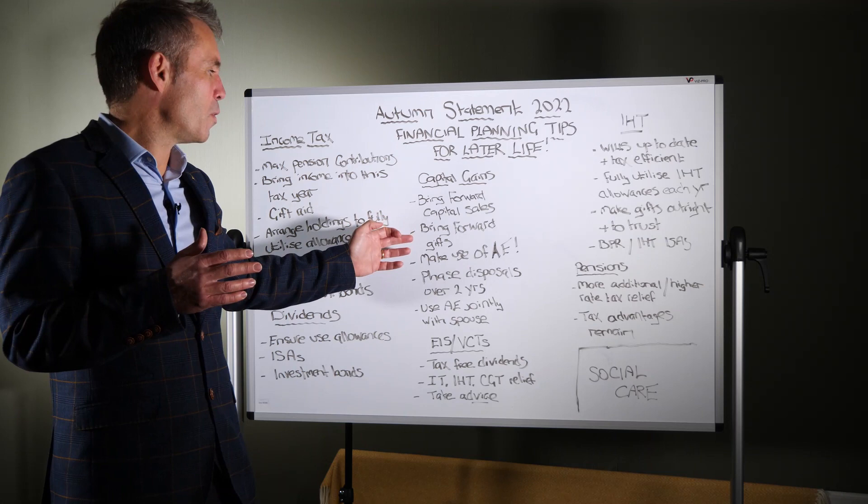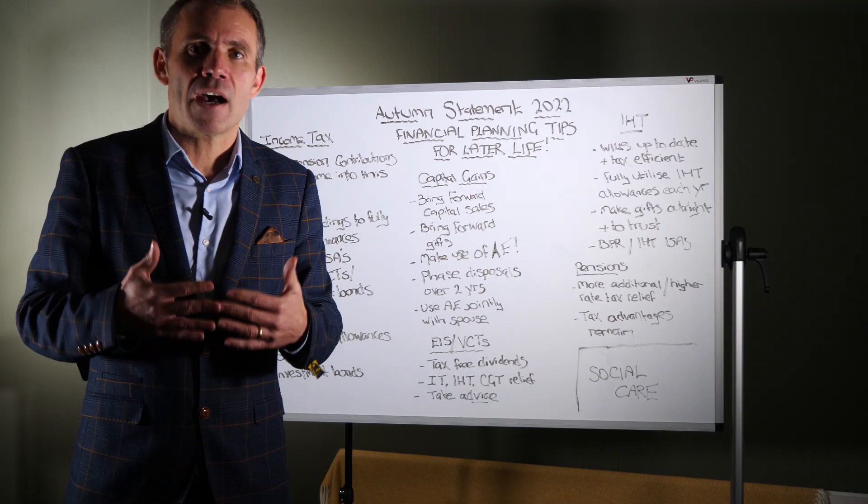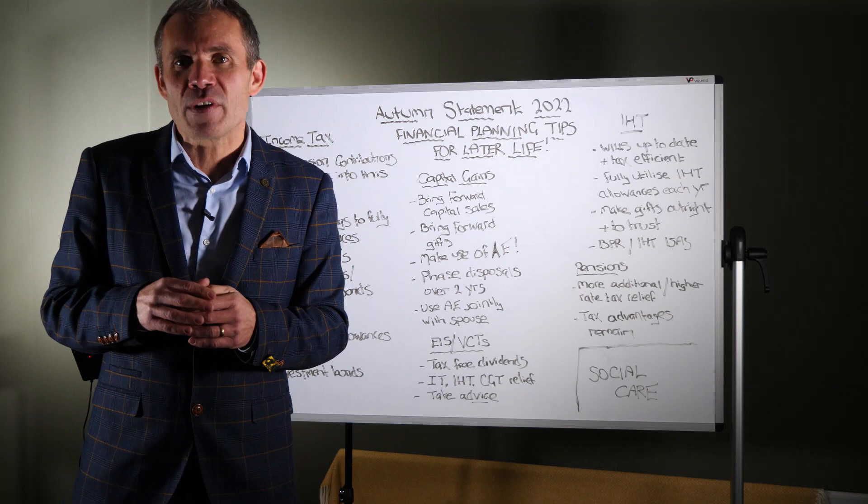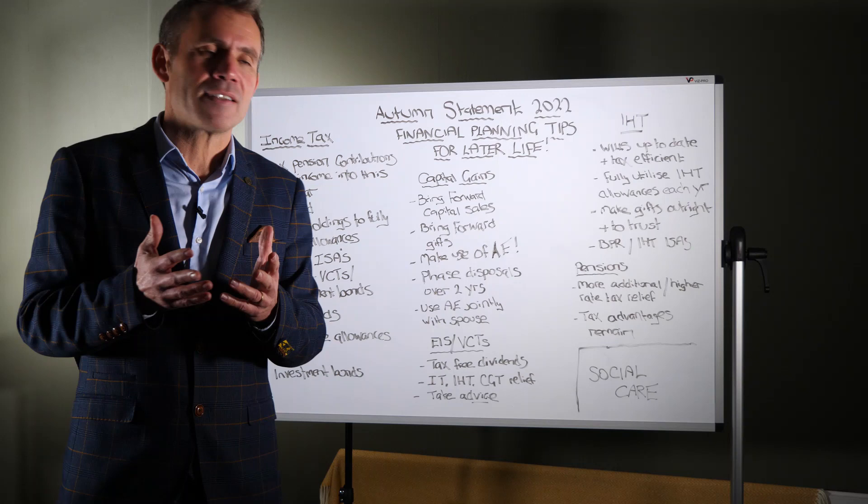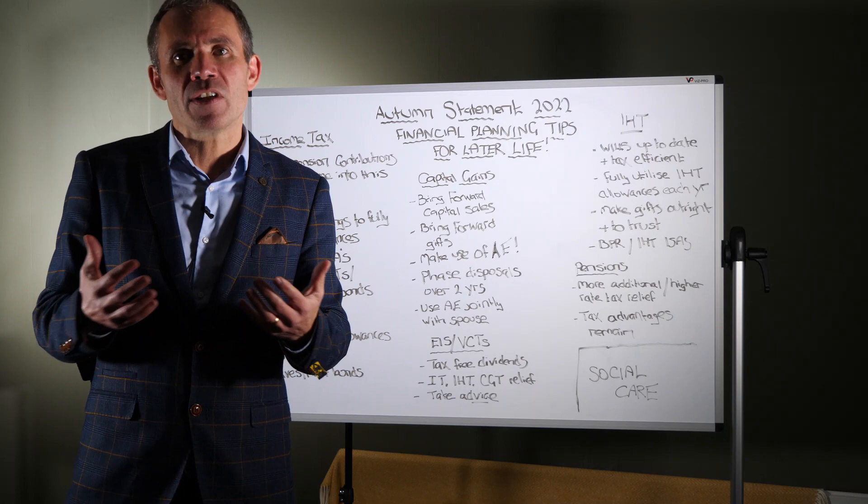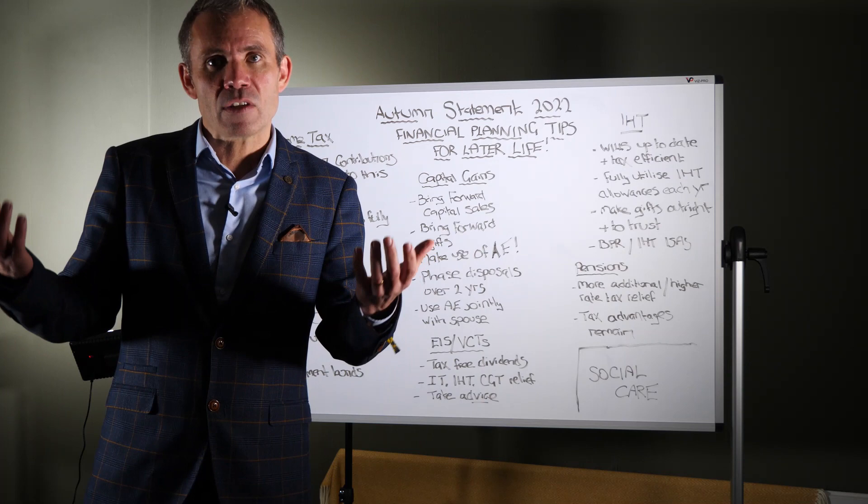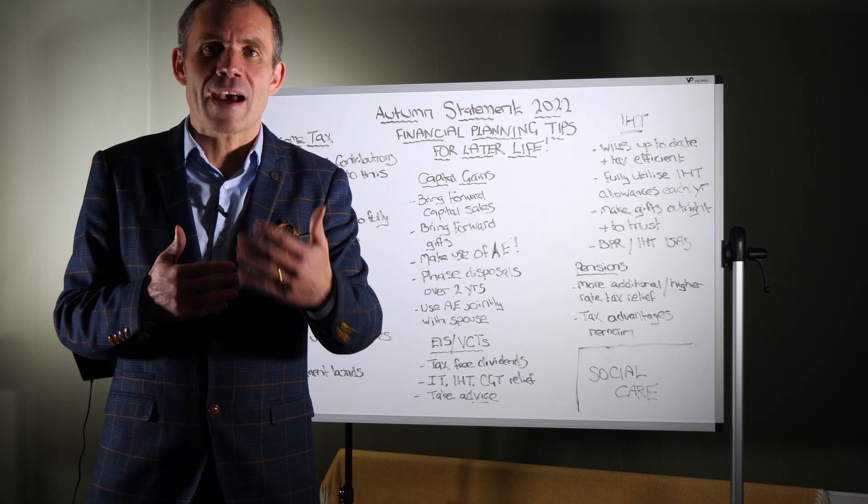Equally, if you're looking to make any gifts to children or grandchildren of assets or properties that are subject to capital gains tax, maybe bring those decisions and those gifts forward again to this tax year. Just make use of that annual exemption. It is the most underutilised exemption, the annual capital gains exemption. Maybe phase disposals over two tax years. Sell some of an asset this tax year, more of the asset next tax year. And remember to use the allowances of both husband and wife. There's no capital gains on gifts between husband and wife. So if you're thinking of selling an asset, transfer an asset to your spouse and get both of you to sell that asset. And effectively, then you get double the annual exemption.